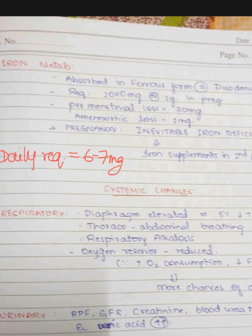In the respiratory system, the diaphragm becomes elevated due to the growing uterus, decreasing total lung capacity by 5 percent. There is thoraco-abdominal or diaphragmatic breathing and cardiorespiratory distress. Oxygen reserves are reduced due to increased consumption and decreased functional residual capacity, increasing chances of apnea in pregnant women. Respiratory minute volume and tidal volume increase, causing shortness of breath.